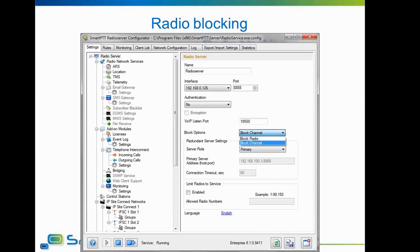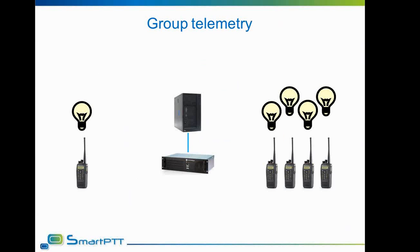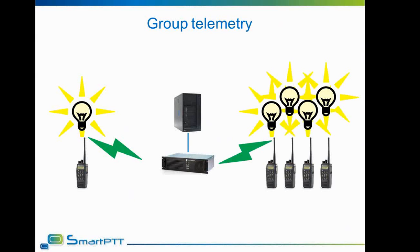The final feature is group telemetry. Group telemetry allows the dispatcher to send out telemetry signals to a group of subscribers. Previously, only sending a private telemetry signal was available. For example, sending a telemetry signal to a station connected to a light bulb will light that bulb up. Group telemetry allows simultaneous control over a selected group of subscribers — so you can send the telemetry signal to a group of radios and all of them will activate their outputs simultaneously.